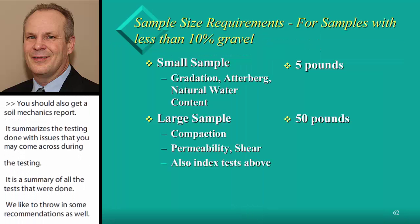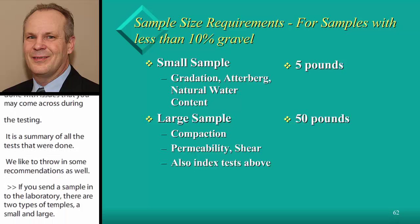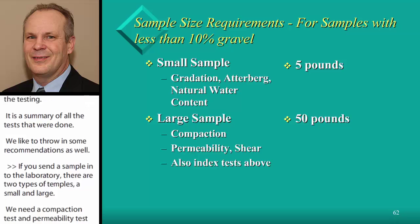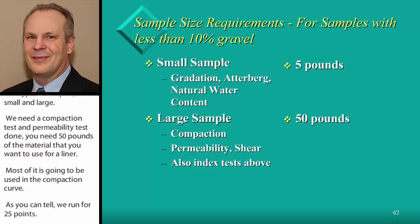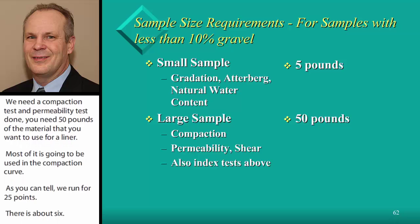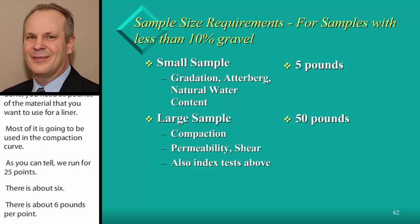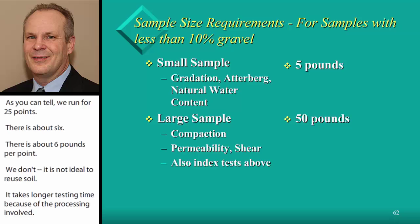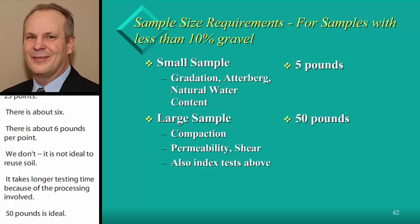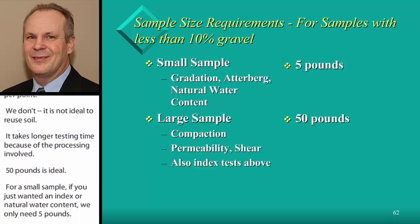If you send samples to the laboratory, there are two types: small and large. If you need both a compaction test and a permeability test done, you really need at least 50 pounds of that liner material. Most of it is used for the compaction curve — we run four to five points at about 5.5 pounds per point, and it's not ideal to reuse soil. So 50 pounds is ideal. For small samples, if you just want index tests and a natural water content, you need about five pounds — for example, if you're sampling different zones through a fill just to identify the materials, small bag samples are sufficient.